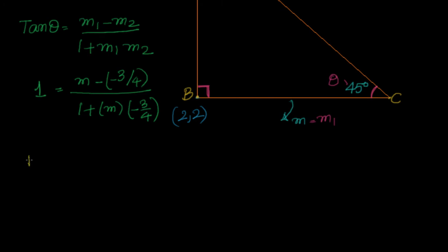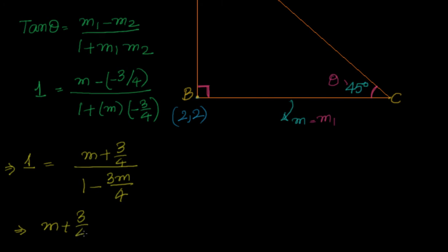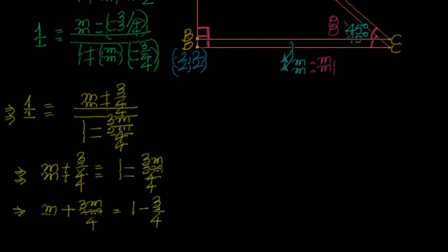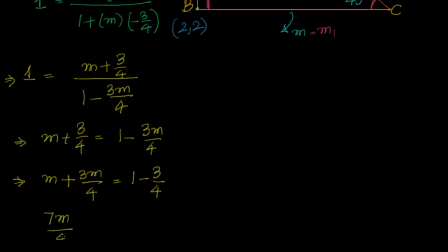We will have 1 equal to m plus 3 by 4 divided by 1 minus 3m by 4. If I do cross multiplication, m plus 3 by 4 equal to 1 minus 3m by 4. Getting m terms to the left: m plus 3m by 4. Getting the constant 3 by 4 to the right: 1 minus 3 by 4. If I simplify, I will have 7m by 4 equal to 1 by 4, or m equal to 1 by 7.